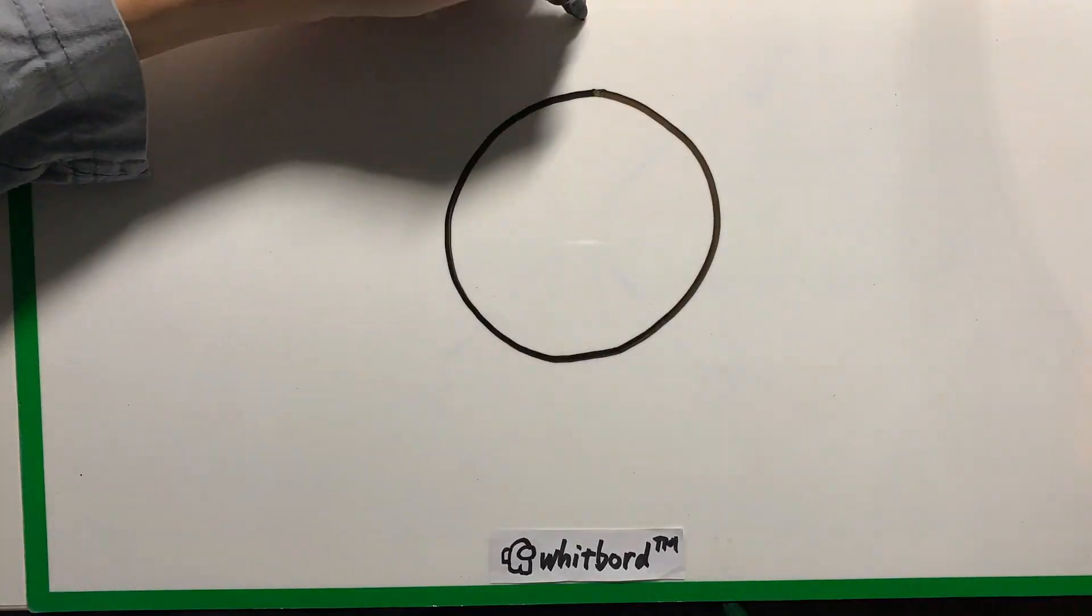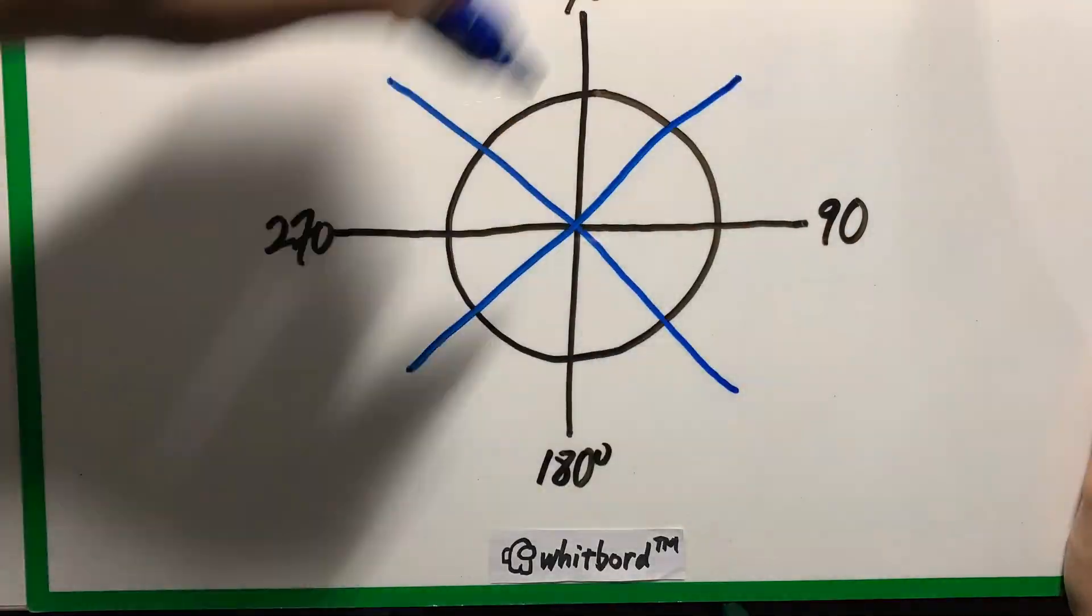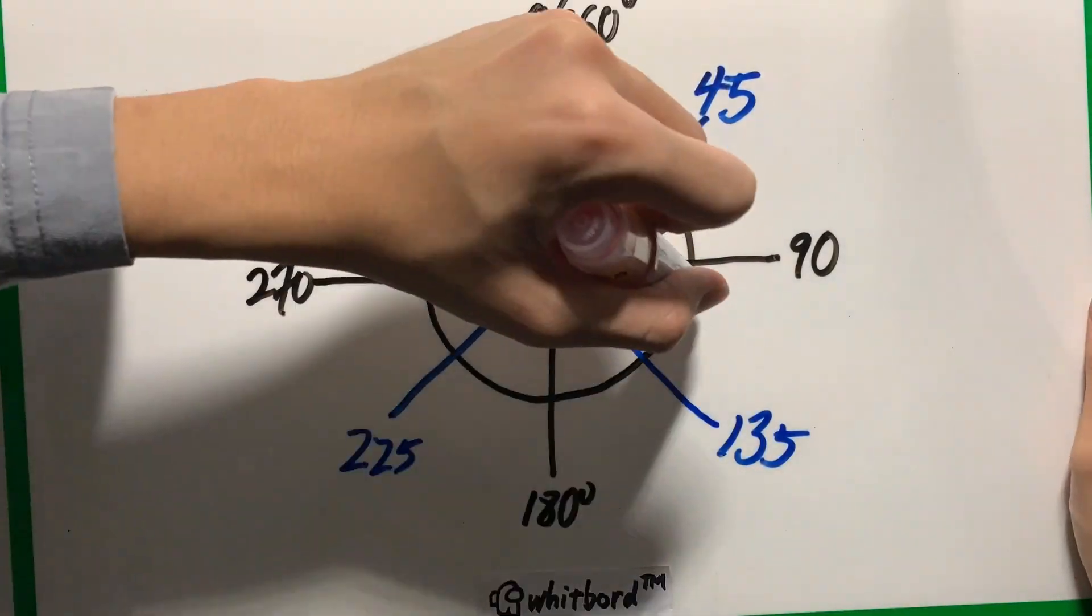When we think of angles, we think of the degree. It is basically one whole rotation divided into 360 equal parts. And it's very commonly used because it works.